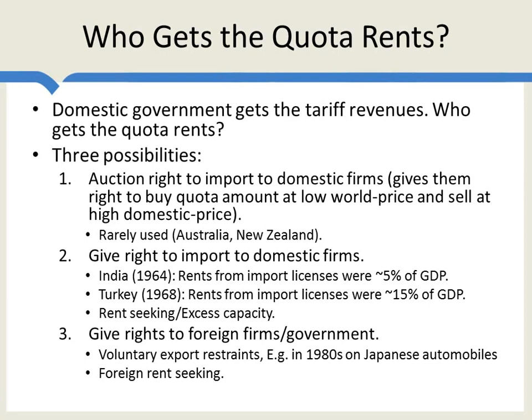Now, why would they do that? Of course, this really wasn't voluntary. Why would the government give away these rents to foreign firms instead of auctioning and keeping the rents themselves or giving them to domestic firms?